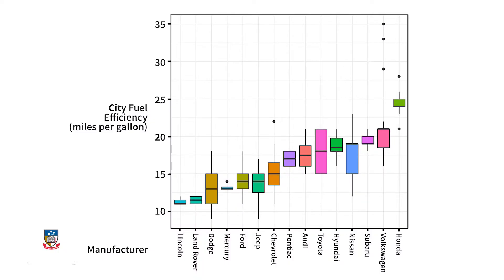Finally, outliers. These are points that stick out from the rest of the data. Box plots have a cool way of pointing these out — they're the dots that appear above or below the box plot. R defines outliers as points more than one and a half times the interquartile range outside the upper or lower quartiles. In this plot, we have potential outliers for Mercury, Honda, Volkswagen, and Chevrolet.